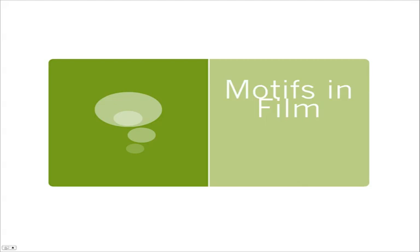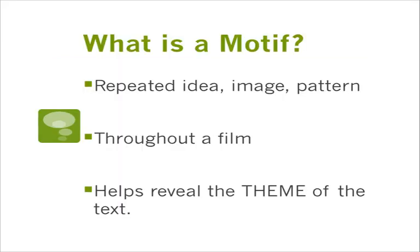Hello and welcome to our podcast on motifs in film. Let's dive right in and take a look at what these things are. A motif in both literature and film is basically a repeated idea, image, or pattern seen throughout a text. Oftentimes with many of these literary devices, the point is to help reveal the text's theme — the author's comment on humanity, being human, living life, something like that.